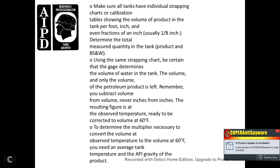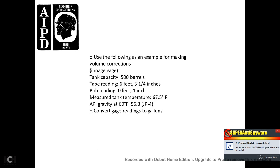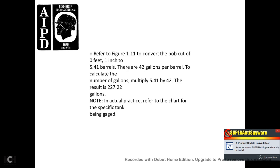To determine the multiplier needed to convert volume at the observed temperature to 60 degrees Fahrenheit, you need the average tank temperature and the API gravity of the product. For example: ingage gauge, tank capacity 500 barrels; tape reading 6 feet 3 and one-quarter inches; bob reading 1 inch; measured tank temperature 67.5 degrees; API gravity at 60 degrees Fahrenheit: 56.3 (JP fuel). Refer to Figure 1-11. Convert the bob cut of 0 feet 1 inch to 5.41 barrels. There are 42 gallons per barrel; multiplying 5.41 times 42 gives 227.22 gallons. In actual practice, refer to the chart for the specific tank being gauged.